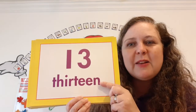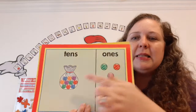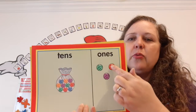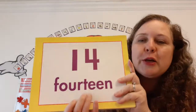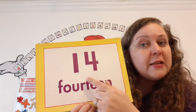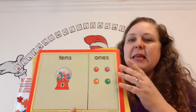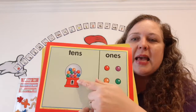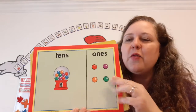Thirteen. Thirteen is part of the teen family because it begins with a one. Thirteen marbles — ten, eleven, twelve, thirteen. Fourteen. Fourteen is part of the teen family because it begins with a one. Fourteen — gumballs. Ten, eleven, twelve, thirteen, fourteen.